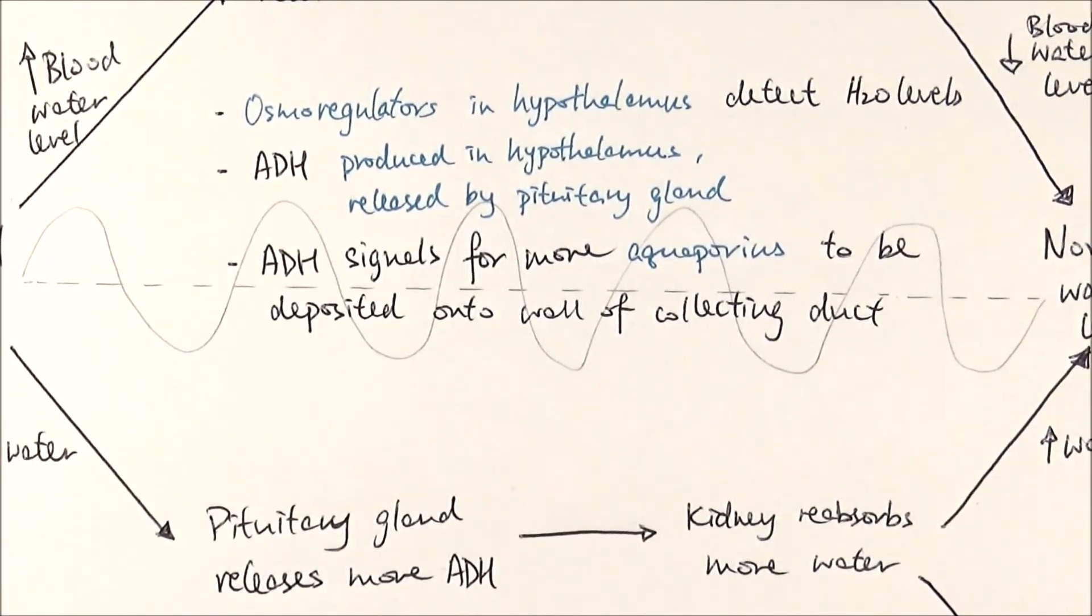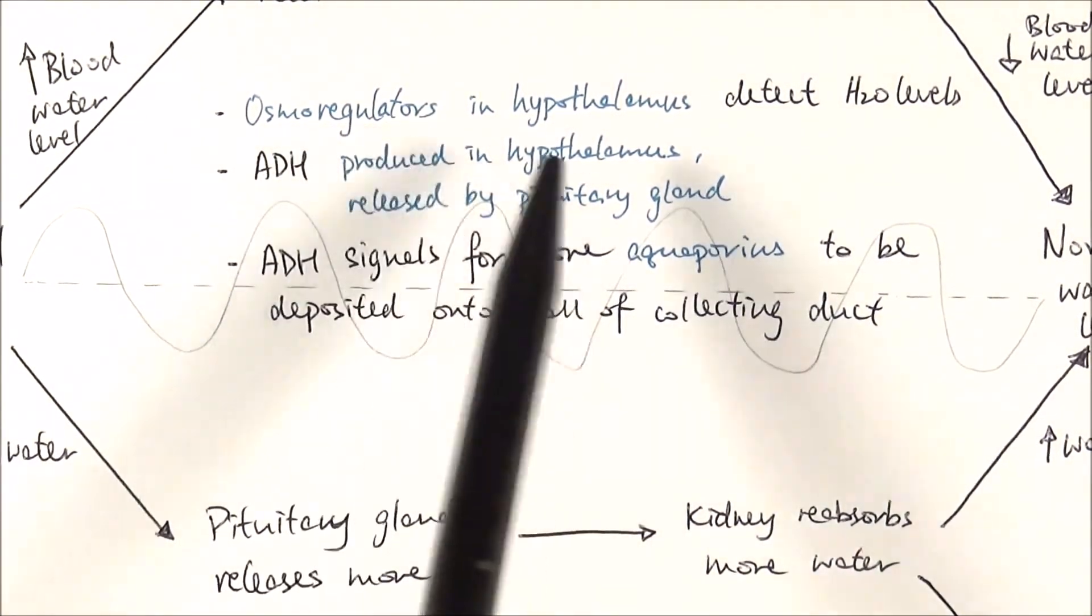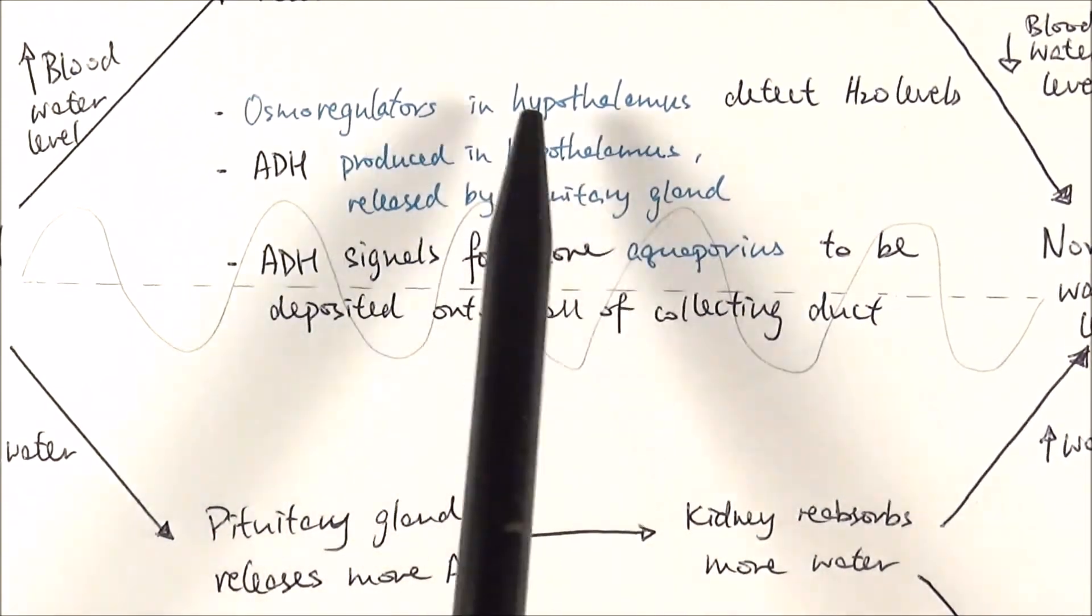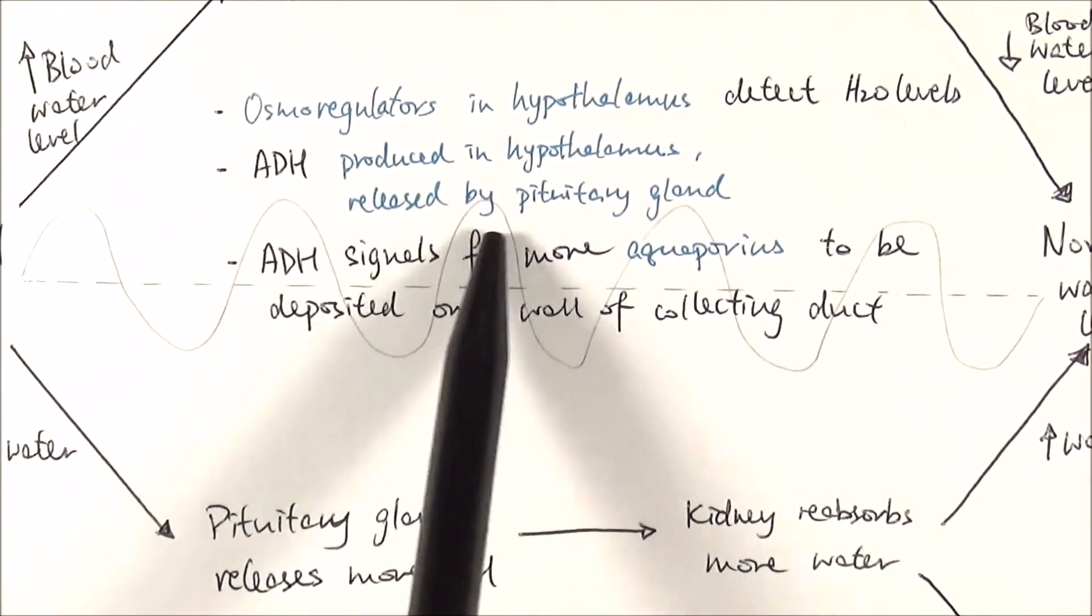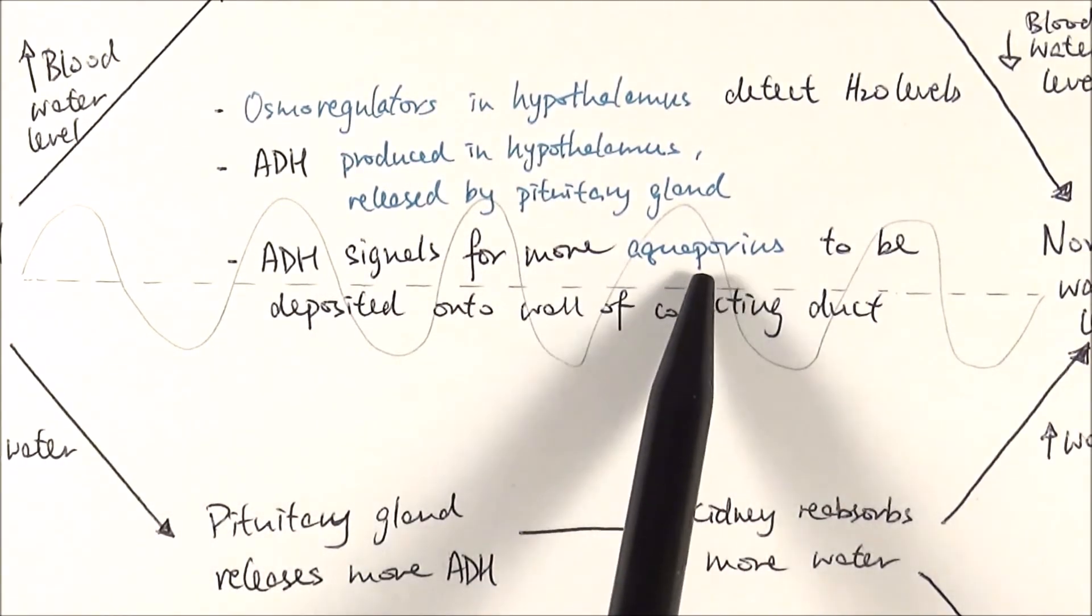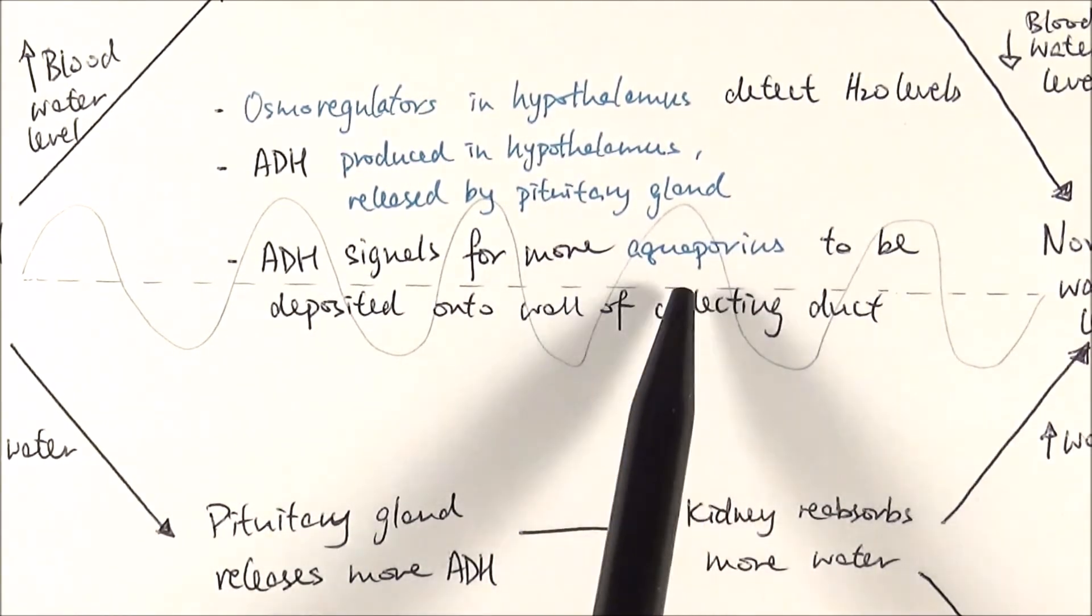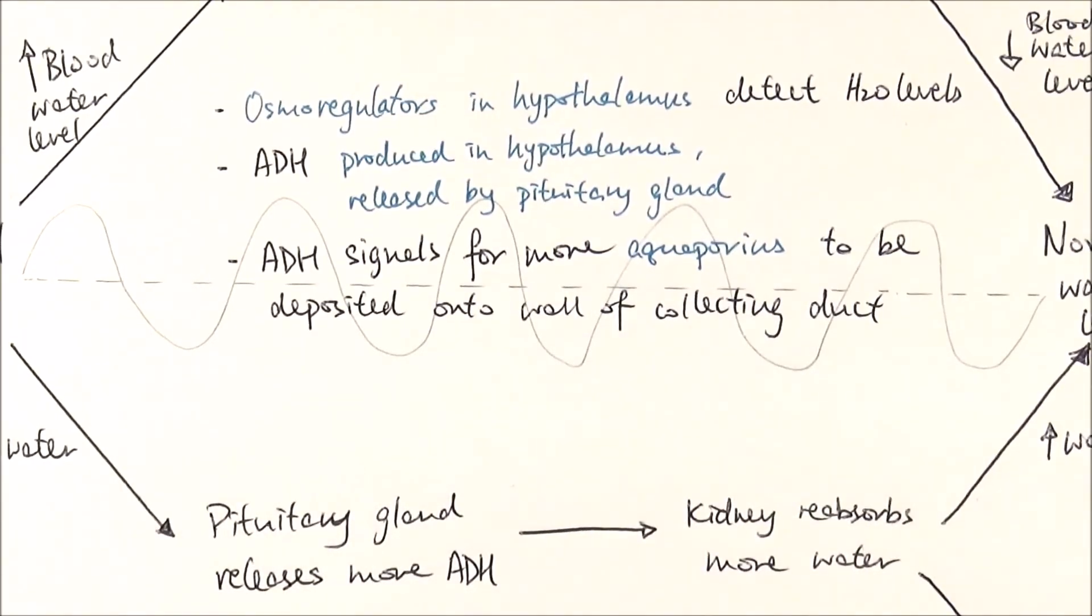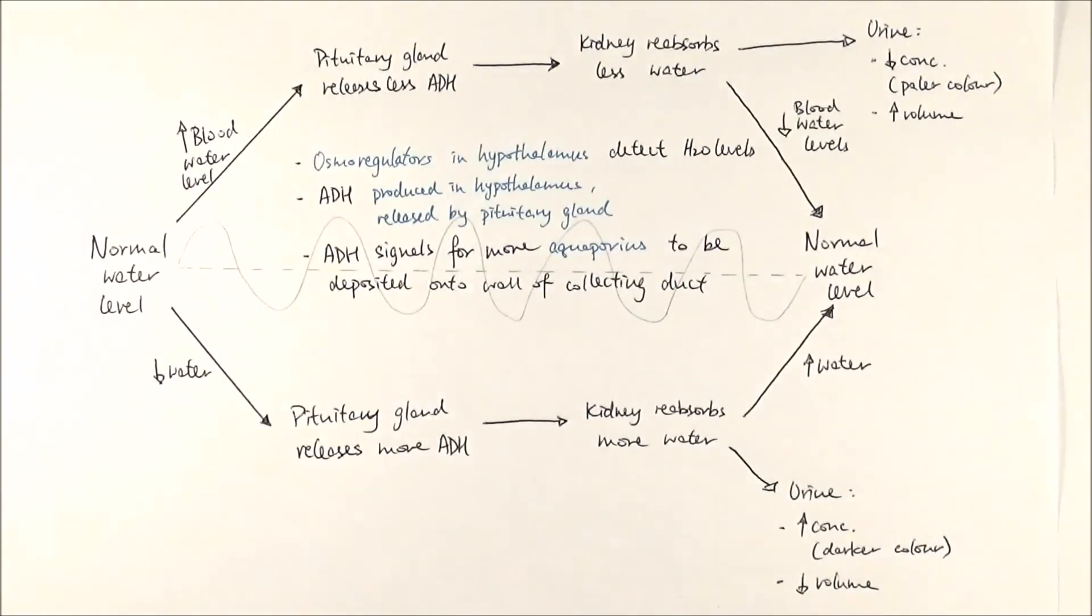Just be aware of some of the key things here. Osmoregulators, hypothalamus and pituitary gland, be aware of how ADH is different in those two situations, and that aquaporins is the key protein channel specific for water which is affected by ADH. And there you have it. This is the basics of osmoregulation.